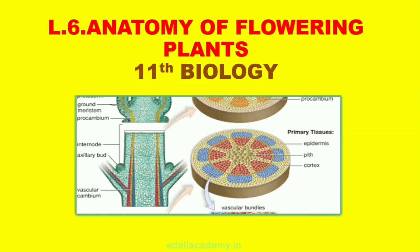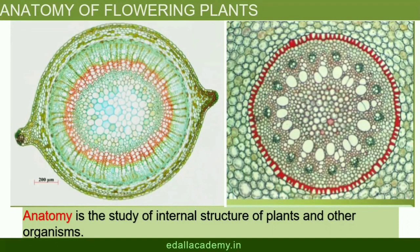You can very easily see the structural similarities and variations in the external morphology of larger living organisms, both plants and animals. Similarly, if we were to study the internal structure, one also finds several similarities as well as differences. This chapter introduces you to the internal structure and functional organization of higher plants. The study of the internal structure of plants is called anatomy.